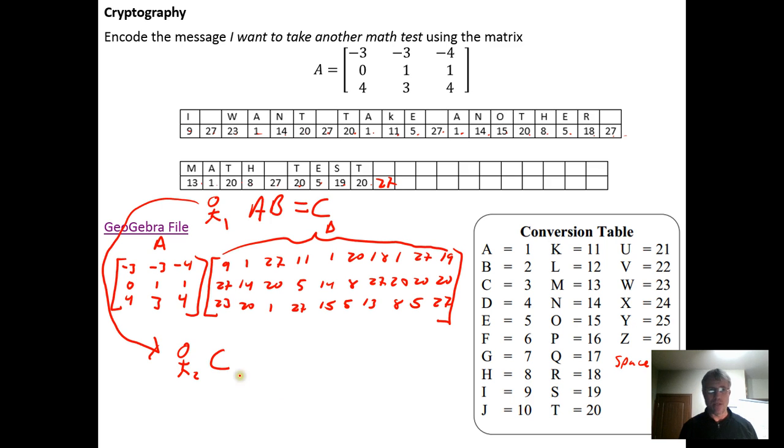You send them the matrix C that is the product of A times B. Then what they need to have in their possession - they need to possess A inverse. The reason this is going to work is if you take A times B and you encode it into C by taking this product, a person who has A inverse, if we think about A inverse times both sides of this equation, A inverse times A equals the identity matrix. The identity matrix times B equals B, so A inverse times C gives us the encoded matrix back.